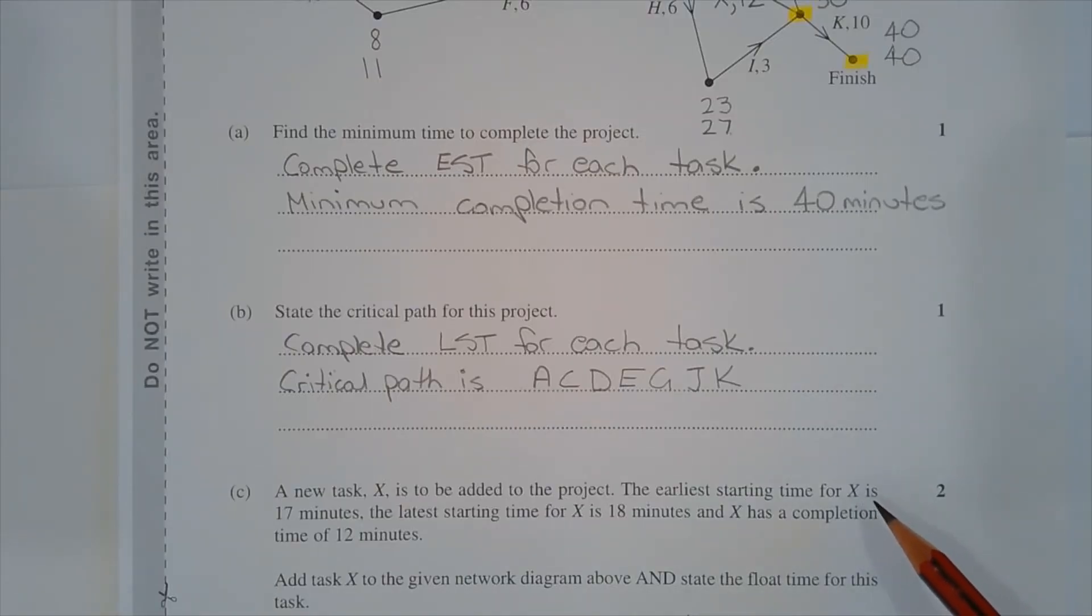Task X is not on the critical path because its earliest starting time is different to its latest starting time. The earliest starting time for task X is 17 minutes, and that gives us a clue as to where to locate task X on the network diagram. Also note that task X has a completion time of 12 minutes.